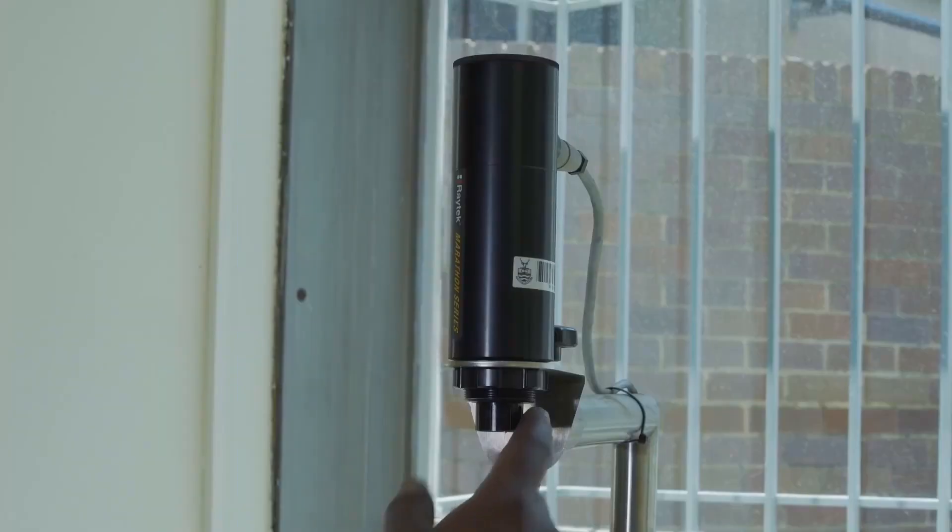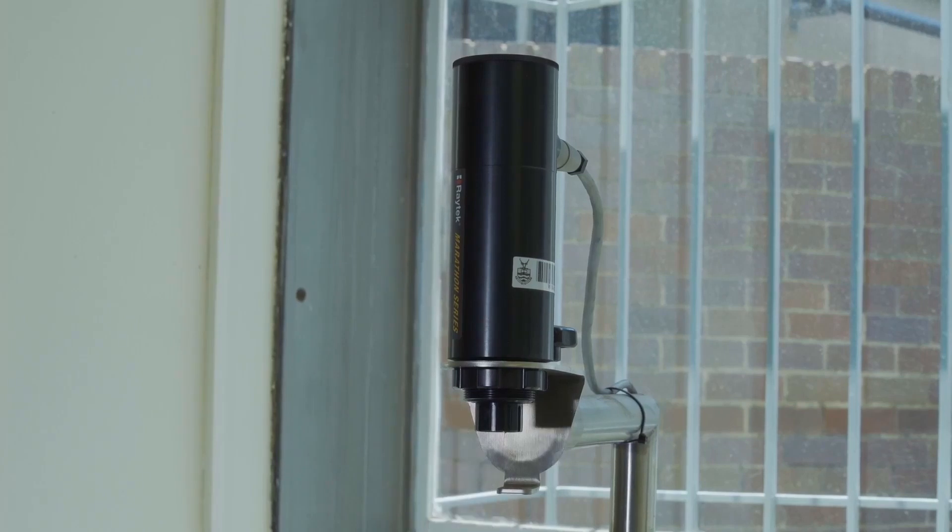So this is the optical pyrometer. This actually measures the temperature of the scraps as we melt the scraps and as we pour the liquid metal into the mold.